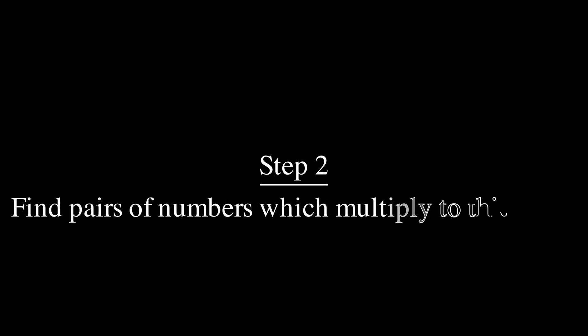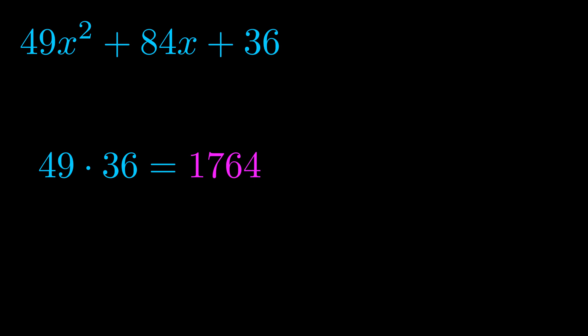Step two is to try to find all of the pairs which multiply to this number. Now it turns out you don't really need to find all of them, but go ahead and write down as many numbers as you can that multiply to the magenta value for now.